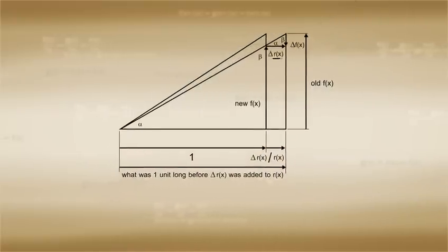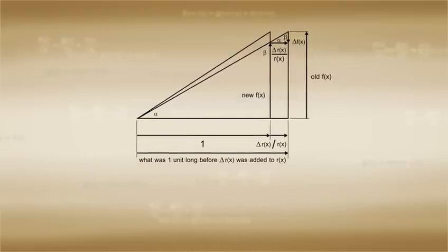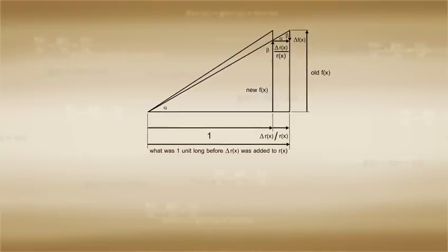Notice that due to the similarities of triangles, we can say that negative delta f over delta r is equal to f over 1.